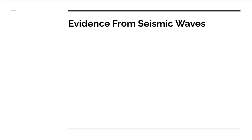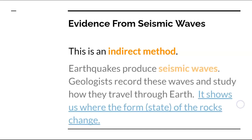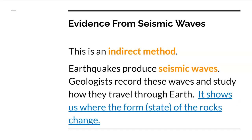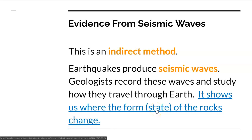Evidence from seismic waves. This is an indirect method. Earthquakes produce seismic waves. Geologists record these waves and study how they travel through the Earth — it shows us where the form, or state, of the rocks change. Form, in this case, means the same as state, which means is it a solid, liquid, or a gas.